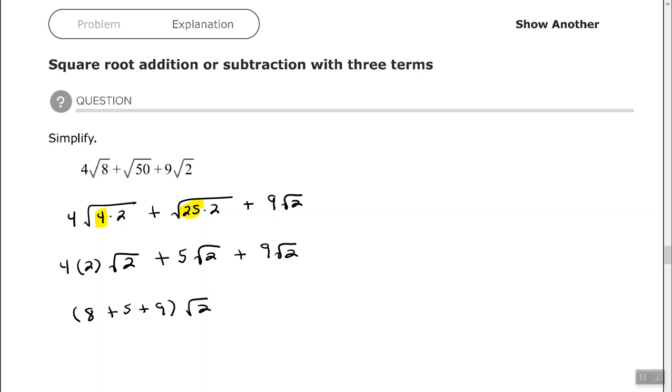So that gives us, let's see, 9 plus 8 is 17, plus 5 is 22 times the square root of 2.